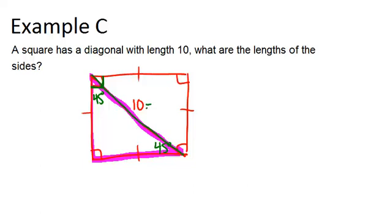So 10 is our x root 2 and we're trying to figure out x. So it's like example B. We're going to solve this equation 10 equals x root 2 and to do that we divide both sides by root 2.